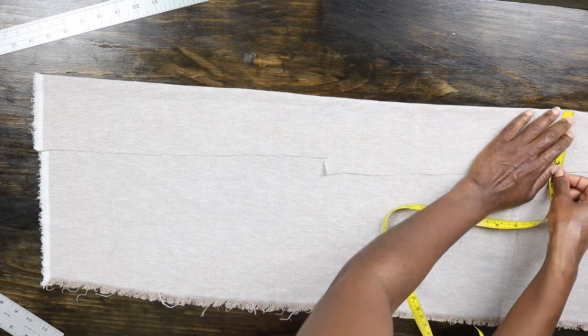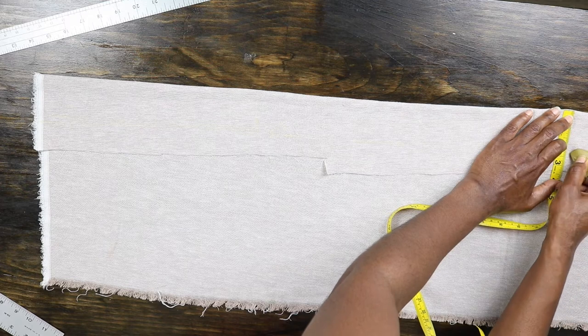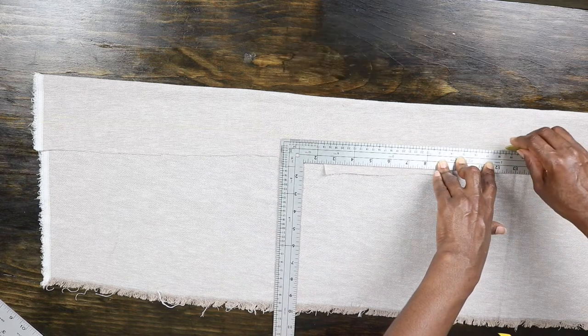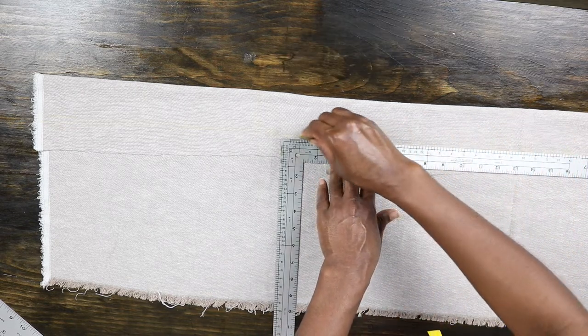I wanted the waistband to be one and a half inches wide and I added a little bit more in order for the elastic to sit nicely in the band when inserted.